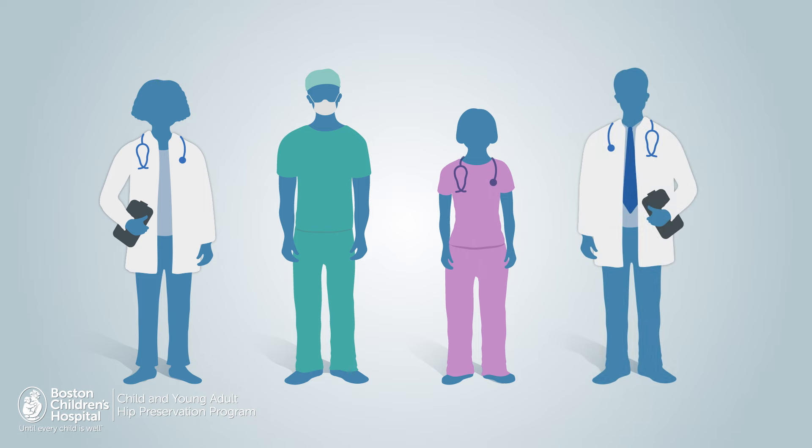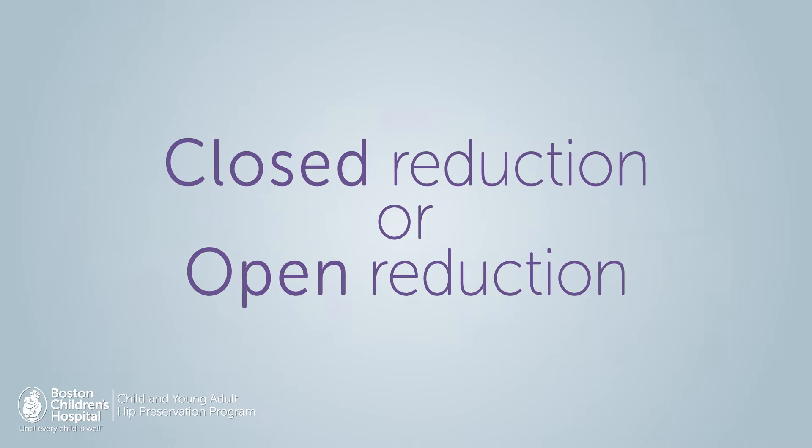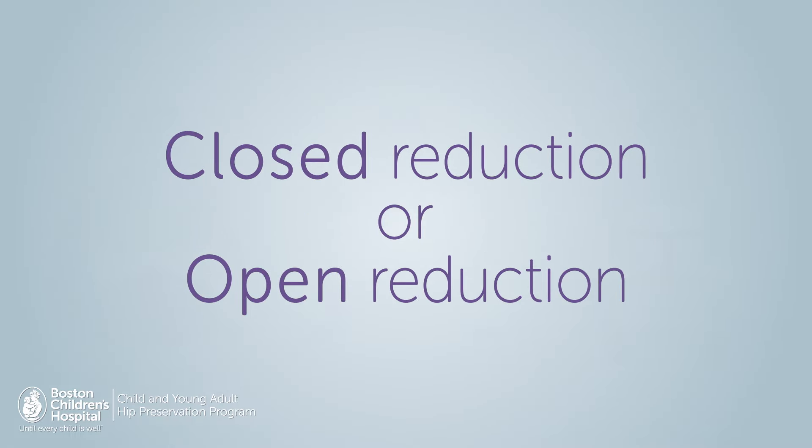If hip dysplasia is diagnosed later and your child is already walking, it is possible that a procedure will be needed to put the hip joint back in place. This type of procedure is called hip reduction. Your child will either have a closed or an open reduction.